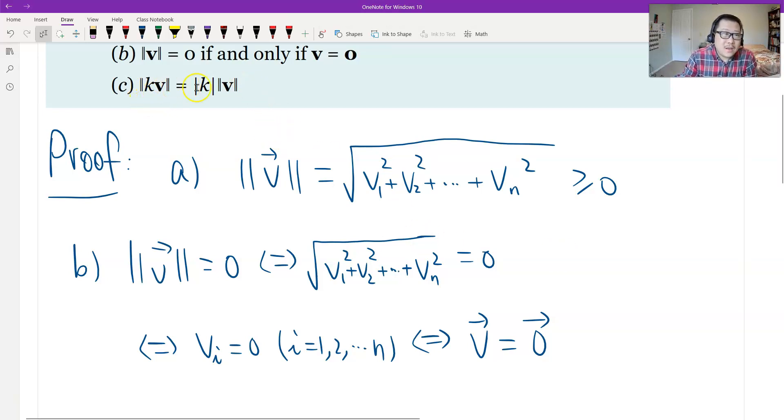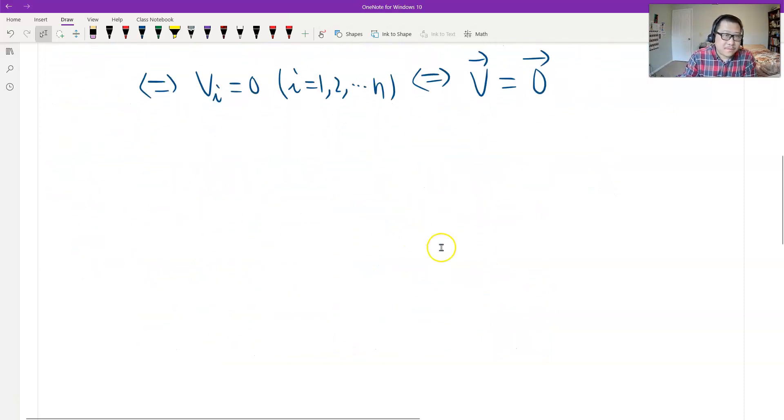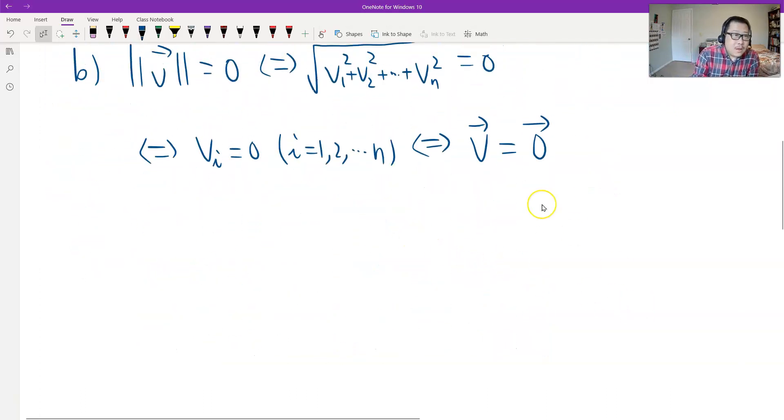But C is similar to a linear property. You can check the order like a coefficient or the constant number outside of the norm, but be sure to put the absolute value. We can do calculation of the norm of K times V.